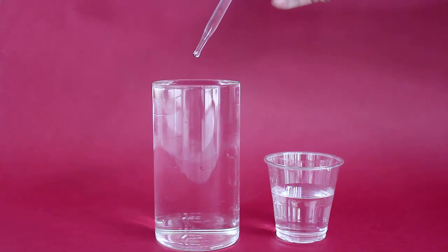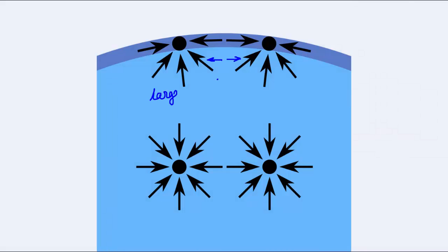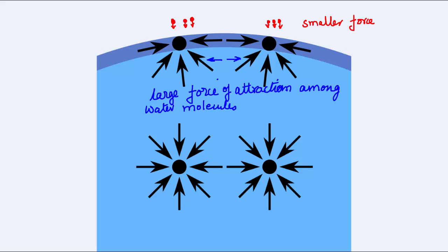Basically water molecules attract each other more than they attract air molecules. At the surface, molecules are attracted to water molecules on the side and below and weakly attracted to the air molecules above. This resulting inward force called surface tension causes water to behave as if the surface was covered by a thin stretched elastic membrane.